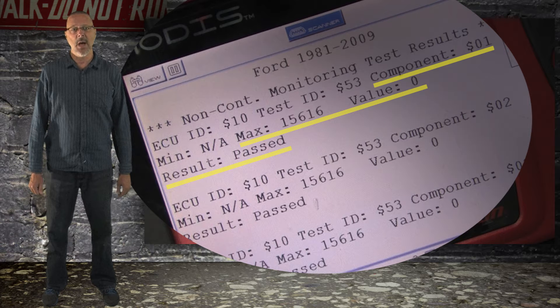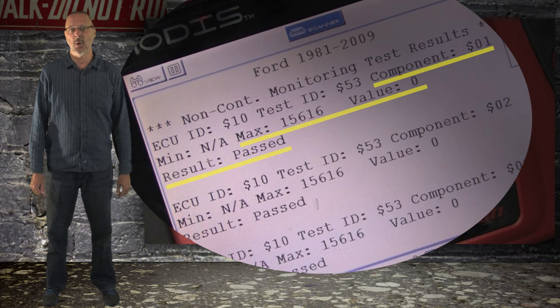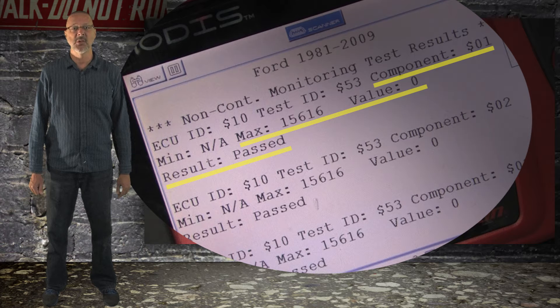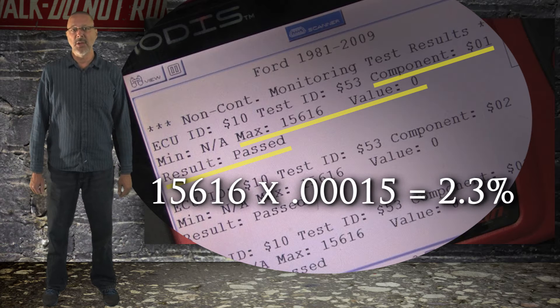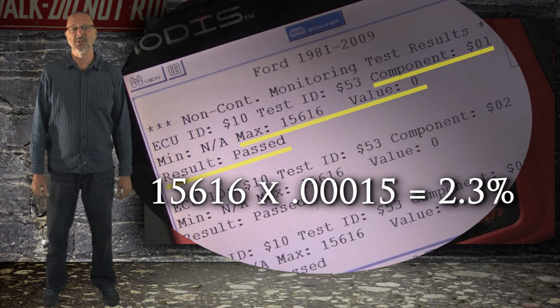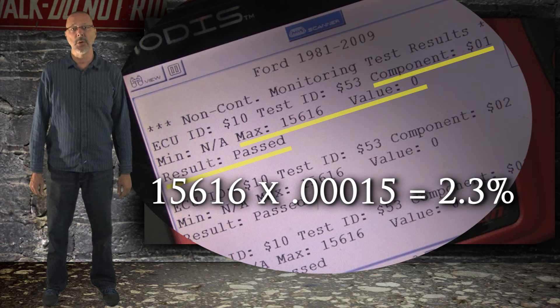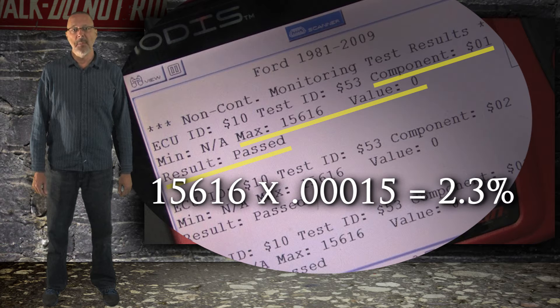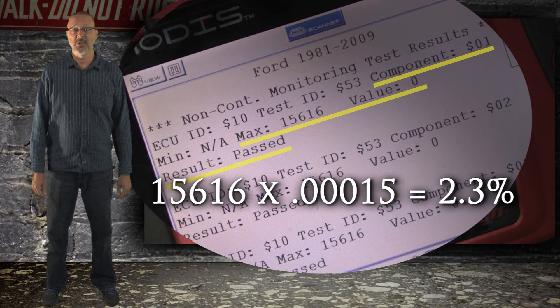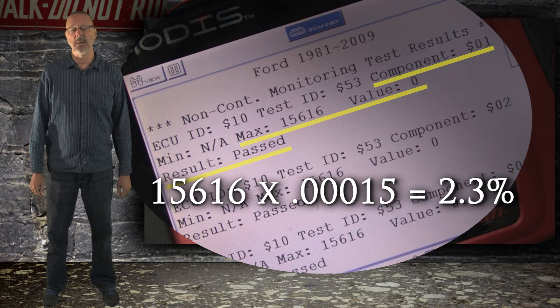To convert the value into a percentage, on this vehicle multiply it by 0.00015. For example, the MAX value is 15,616. Multiply it by 0.00015 equals 2.3%. When the misfire counts go over 2.3%, the check engine light will illuminate.